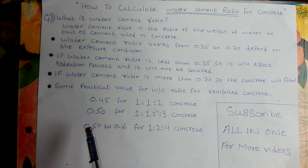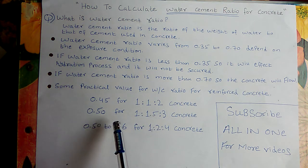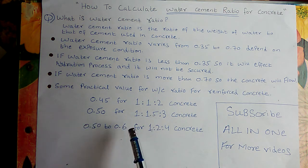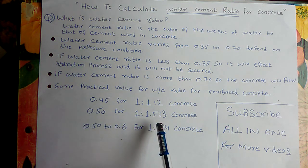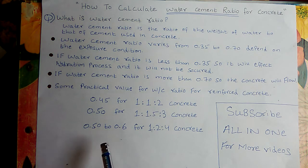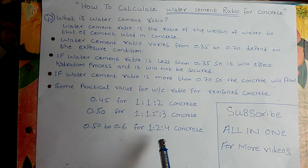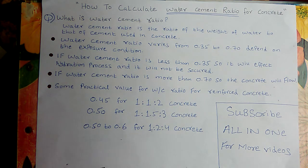Some practical values for water cement ratio for reinforced concrete are: 0.45 for 1:1 concrete, 0.50 for 1:1.5:3 concrete, and 0.50 to 0.60 for 1:2:4 concrete.